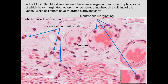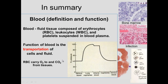When infection occurs, margination takes place — white blood cells stick to venules and then migrate through the vessel wall. Some cells are already extravascular, having exited the vasculature to perform their immune function.